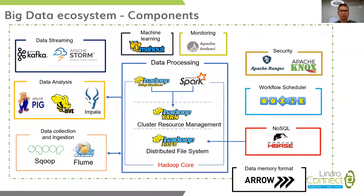For Spark: Spark supports machine learning, streaming, and batch processing. Its computation is based in RAM and provides 100 times faster performance than MapReduce. Spark is very suitable for online data analysis.